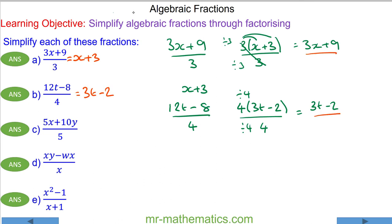Question c: we have 5x plus 10y over 5. We can factorize the numerator by taking out the highest common factor of 5, and that gives 5 times (x plus 2y) over 5. And we can simplify it again with the highest common factor of 5. These will cancel, so we have x plus 2y.